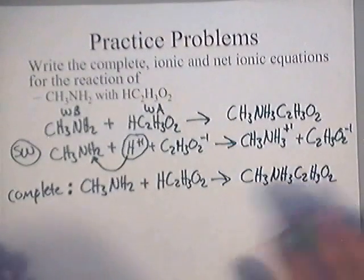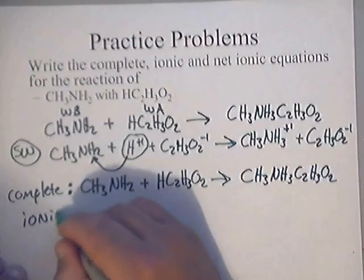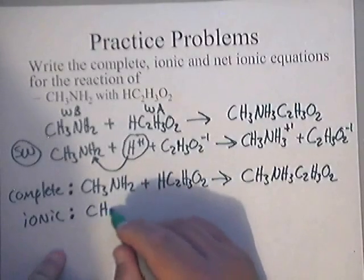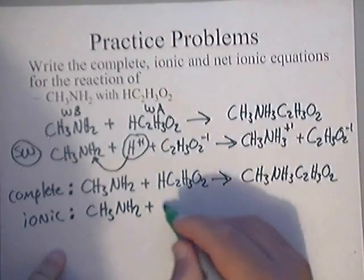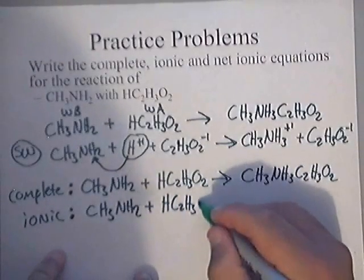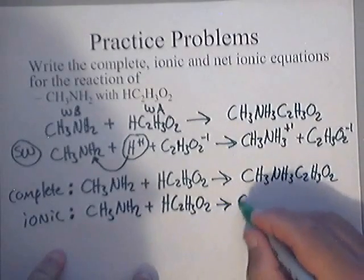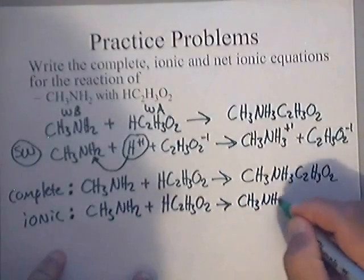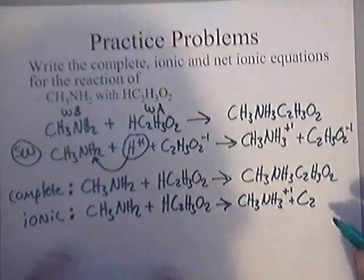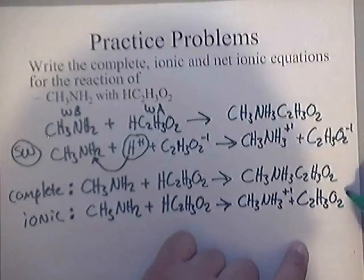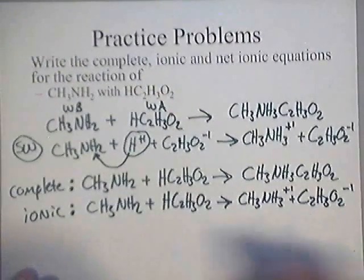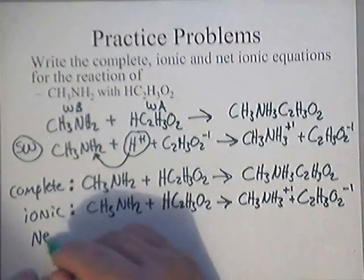Alright, now let's get the total ionic. Now remember you cannot dissociate weak acids or weak bases. So you just write these back down again. The only one that we can dissociate is the product, because it's an acetate ion, so it's soluble. That's where all the scratch work at the top comes in handy.